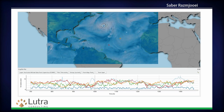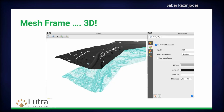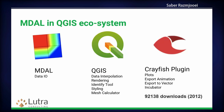We also have a plugin called Crayfish, so you can create plots of the data: time series and also the long profile. Each color represents each of those graphs. We plan to add this plotting option directly into QGIS, so you won't need the plugin. You can also visualize mesh data in 3D. So the different components are: MDAL for data read and write, QGIS for rendering and data editing, and Crayfish for visualization.